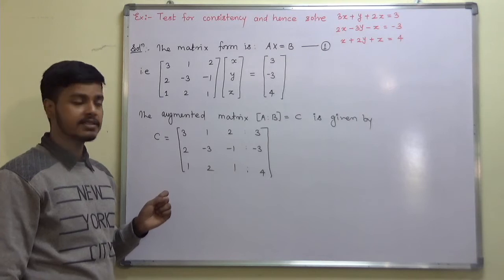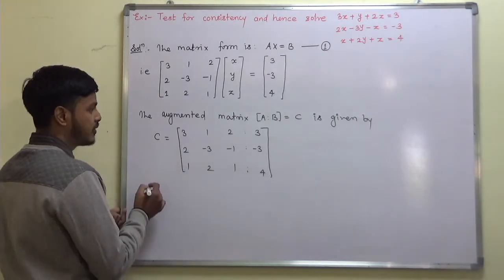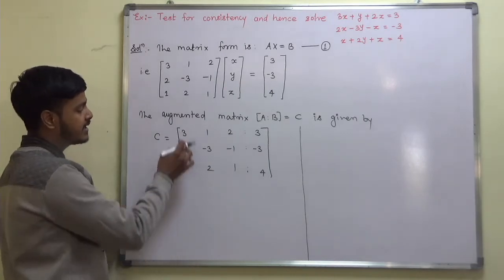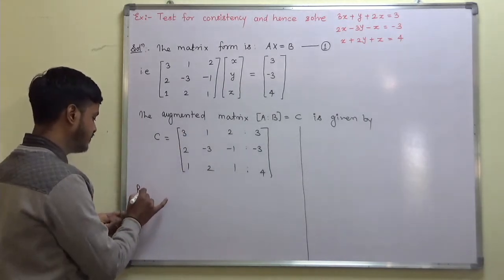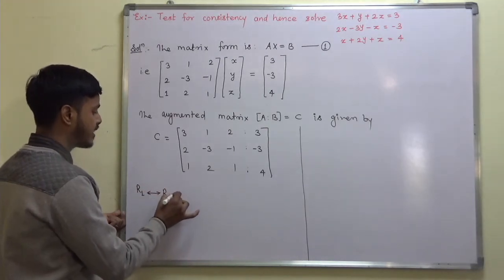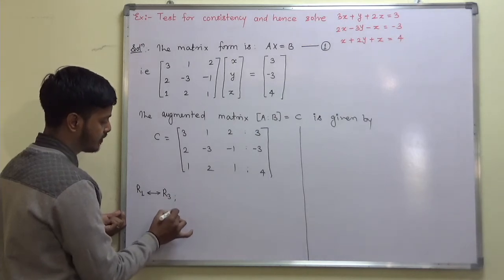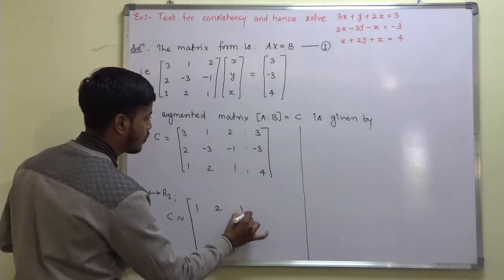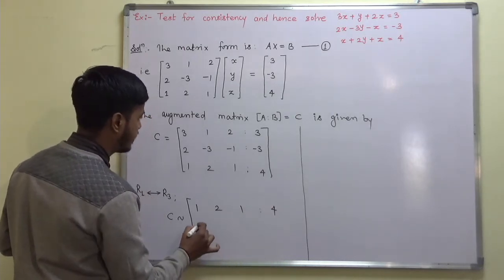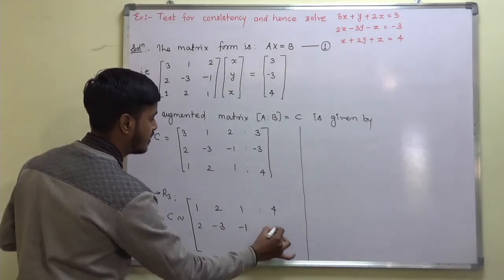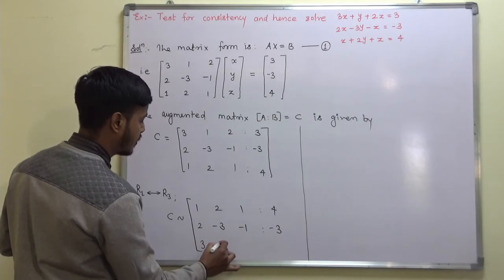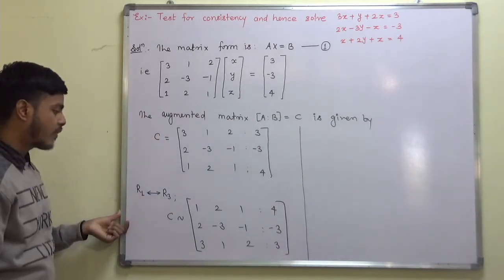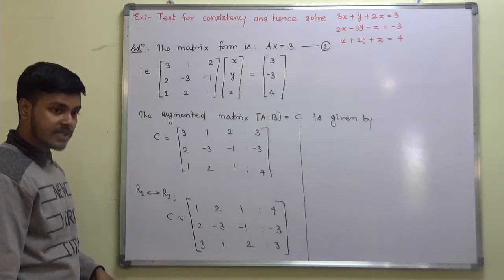Now we have to find the rank of matrix A and matrix C. You must be good at doing the calculations. The very first thing we can do is interchange R1 and R3. After R1 ↔ R3, C is equivalent to: row 1 becomes 1, 2, 1 | 4; row 2 remains 2, -3, -1 | -3; and row 3 becomes 3, 1, 1 | 2, 3.